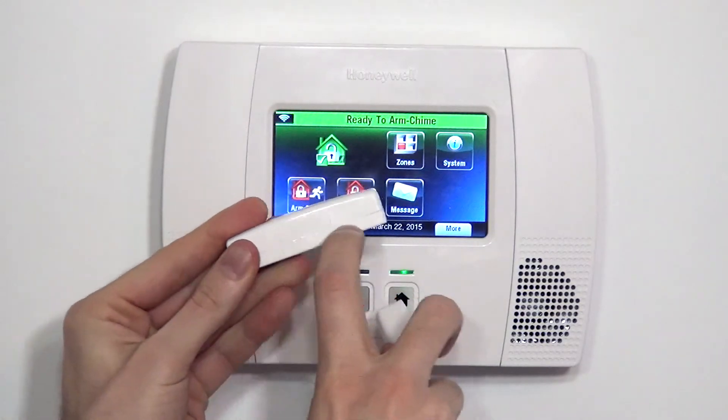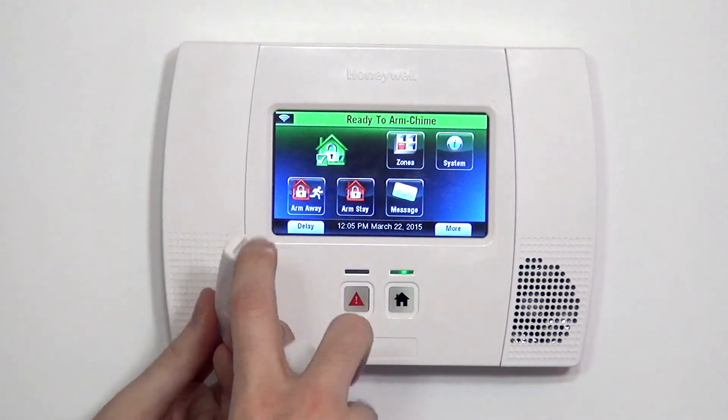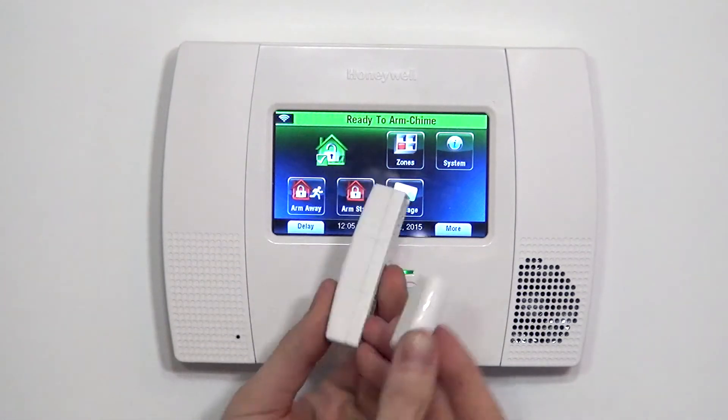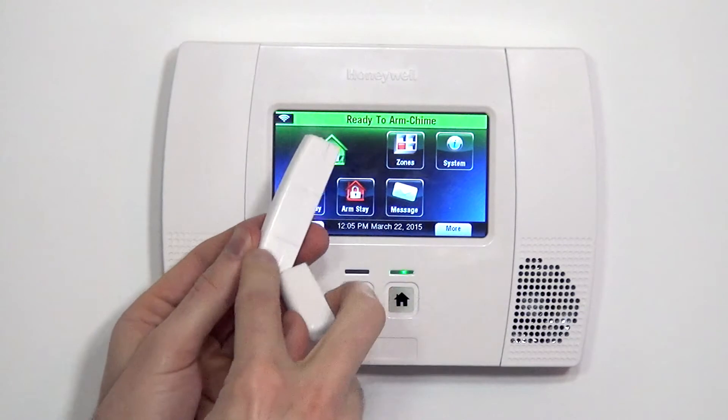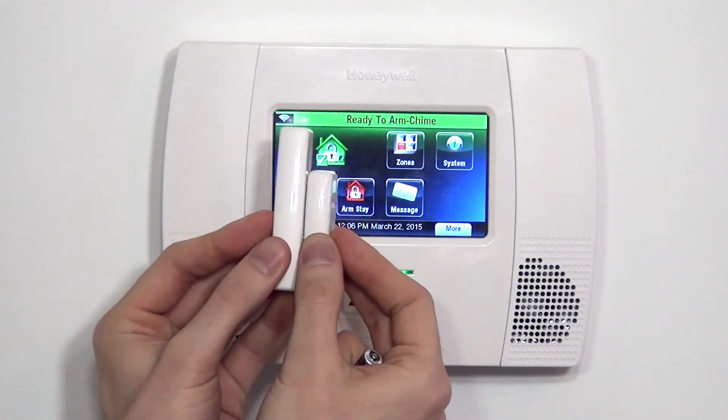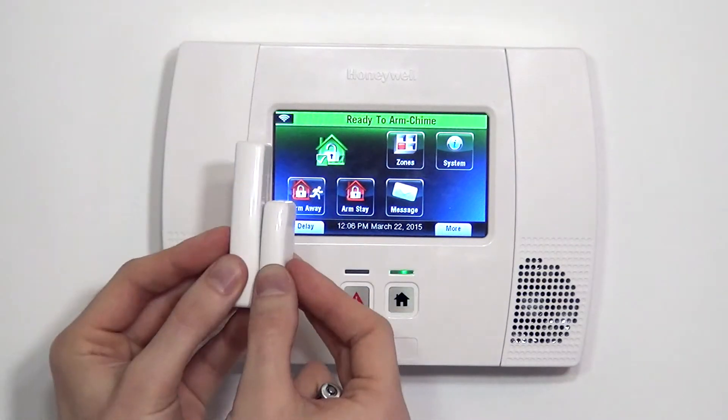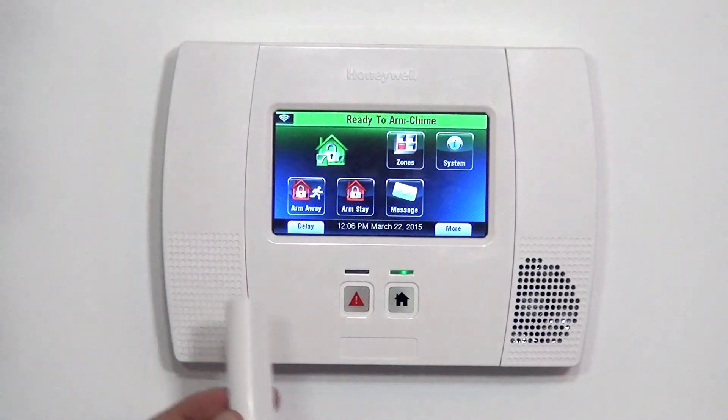On one side of the sensor, you have two hash marks. When you have this mounted, you want your magnet to be on the side with the two hash marks. When the door or window is closed, the sensor is happy. When the window slides up or the door opens, the magnet's pulled away from the sensor and we have our fault or alarm activation if the system is armed.